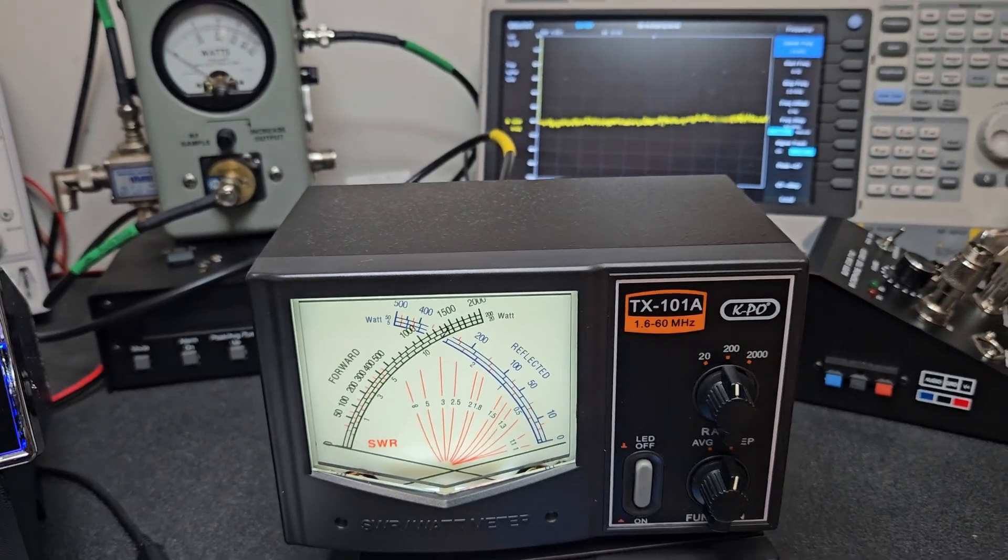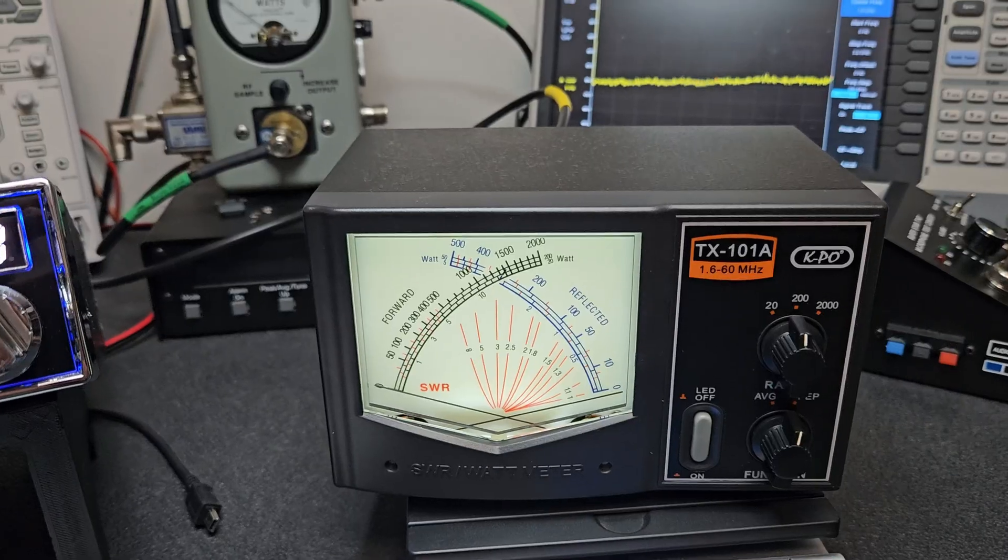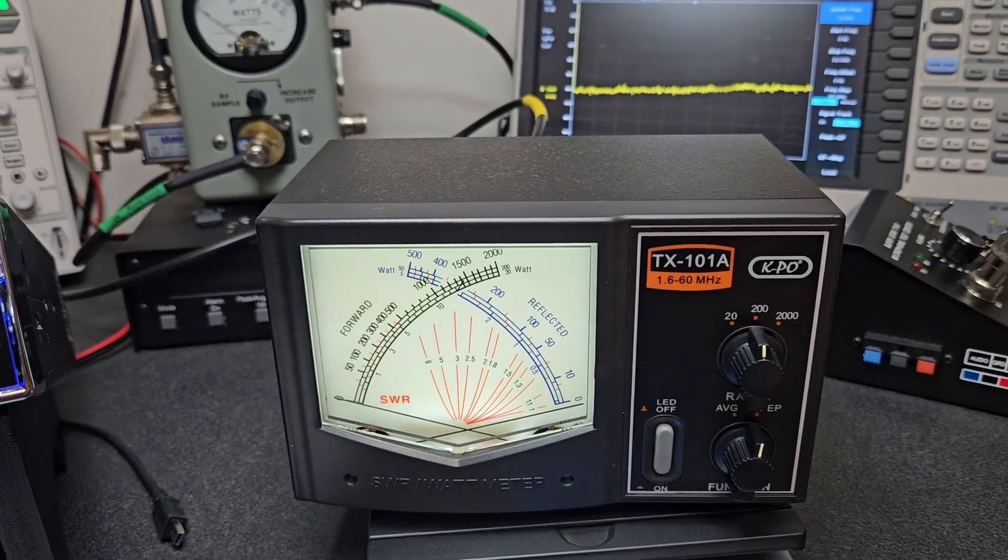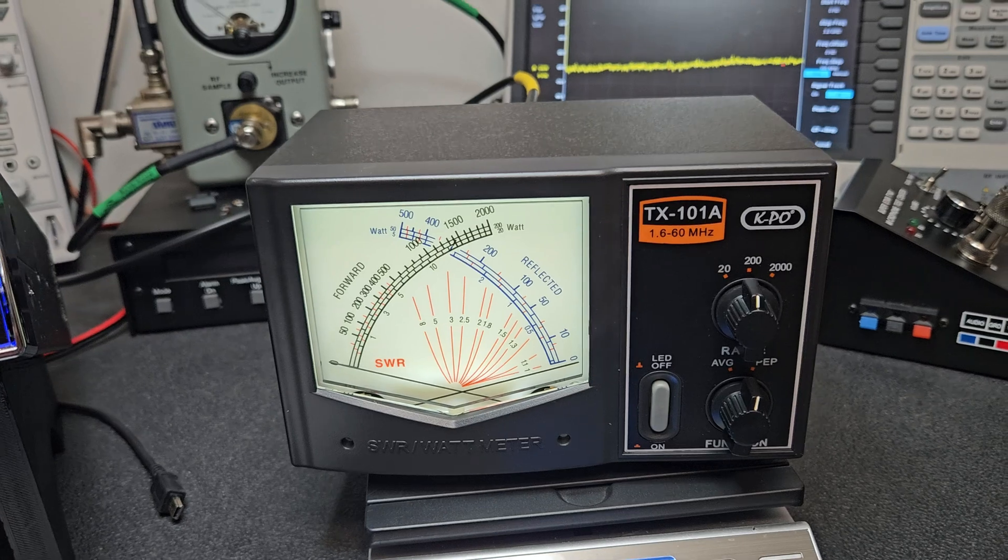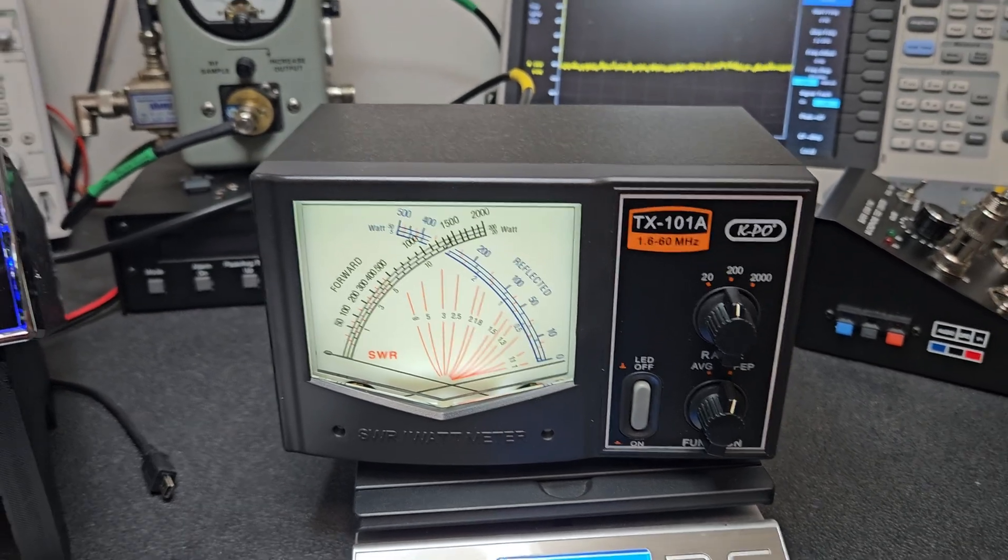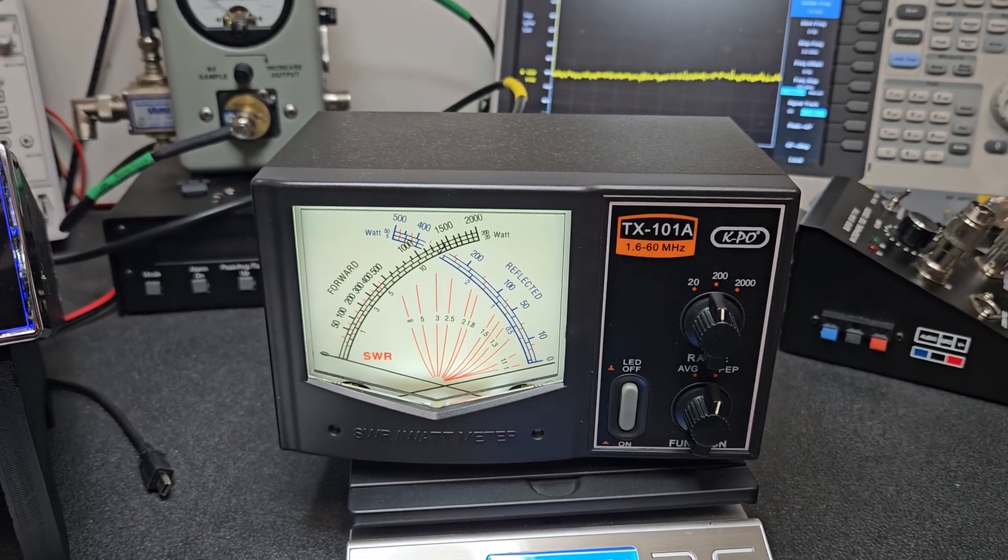That's it. This is the TX-101A. It's good from 1.6 to 60 megahertz and it reads in 20, 200, and 2000 watts. Let me know what you think. I'll get these on my website as soon as possible. 73.